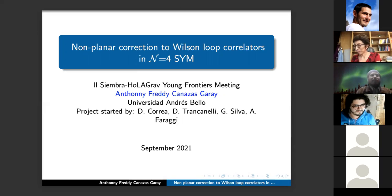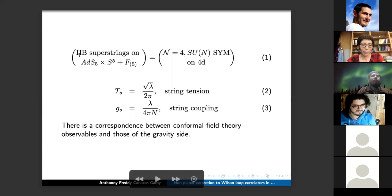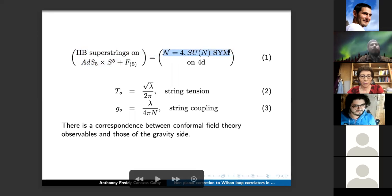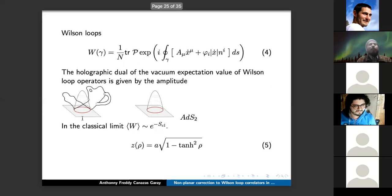Anthony, can you—my talk is based on an idea started by Correa, Trancanelli, Silva, and Faraji, and now I'm joining them. Next. So I'm going to begin this talk by telling you something most of you already know. So in the AdS/CFT correspondence proposed by Maldacena, one describes type IIB superstrings on AdS_5 × S^5 in terms of N=4 super Yang-Mills in four dimensions. We can match the string tension and the string coupling with the CFT parameters. As you can see, there is a matching between the global symmetries, and we also know that there is a correspondence between CFT observables and those of the gravity side.